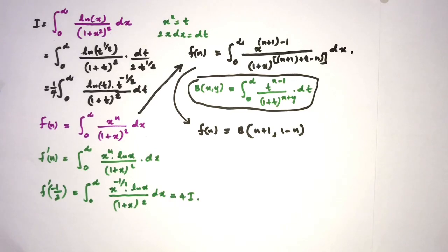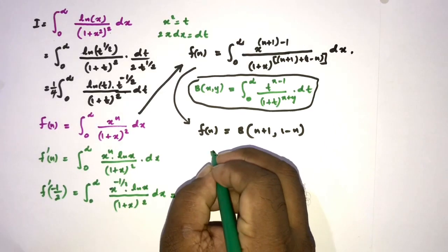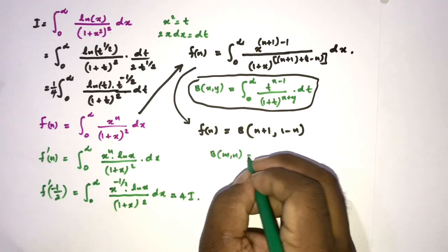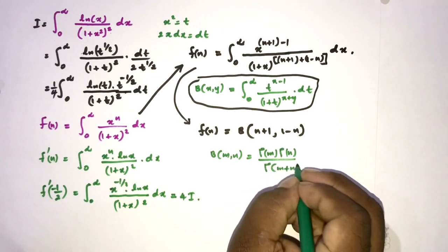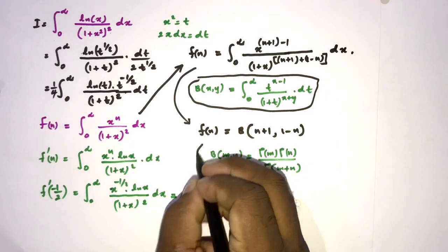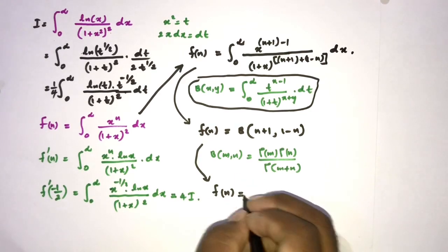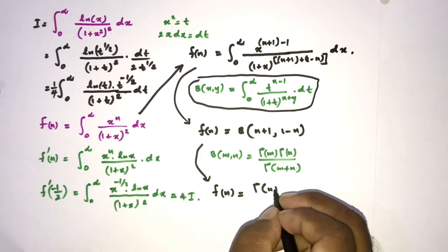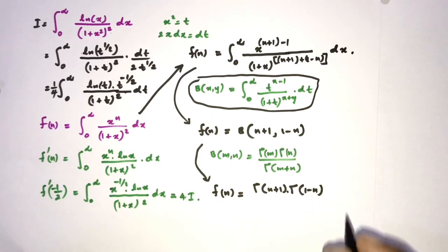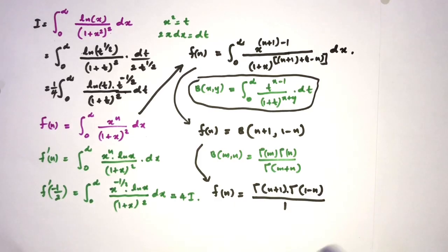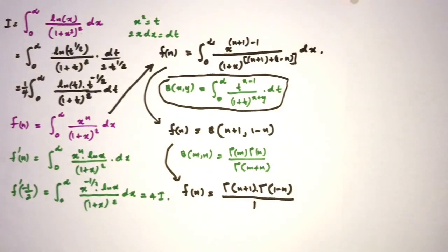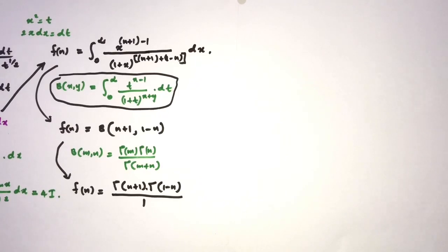Using the relation between beta and gamma functions — beta(m, n) equals Gamma(m) times Gamma(n) over Gamma(m+n) — we get f(n) equals Gamma(n+1) times Gamma(1−n) over Gamma(2), and since Gamma(2) equals 1, f(n) equals Gamma(n+1) times Gamma(1−n).